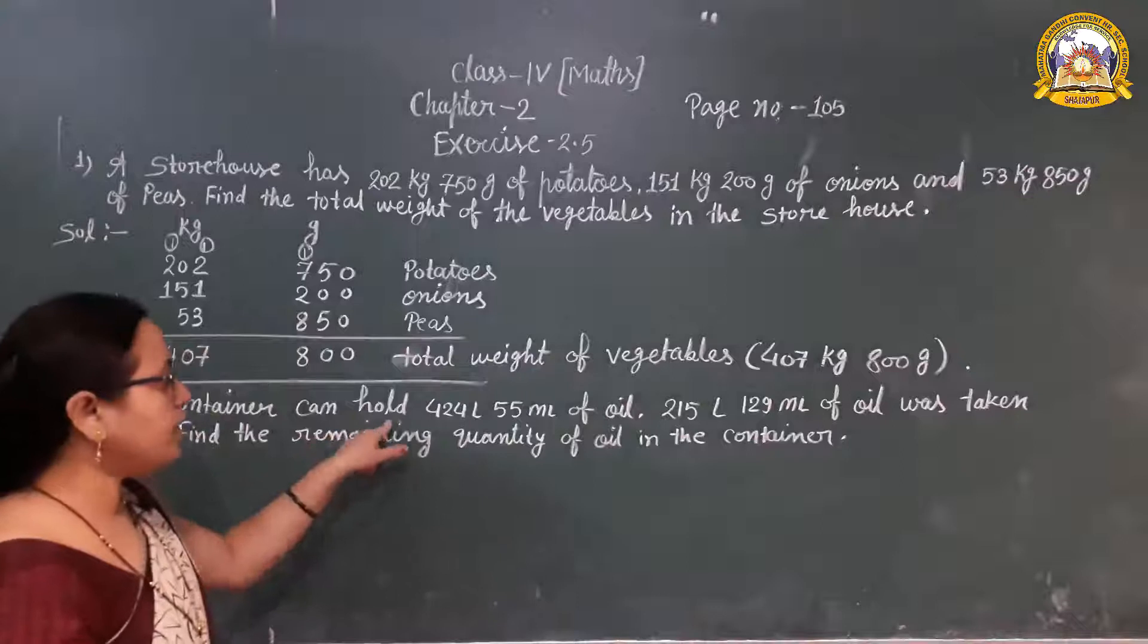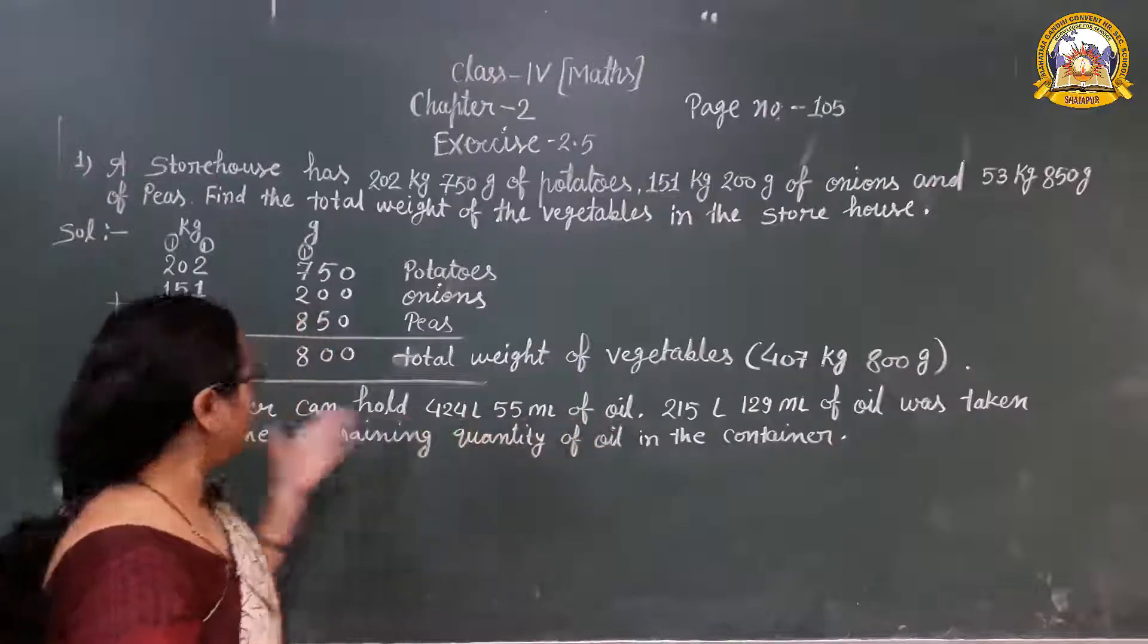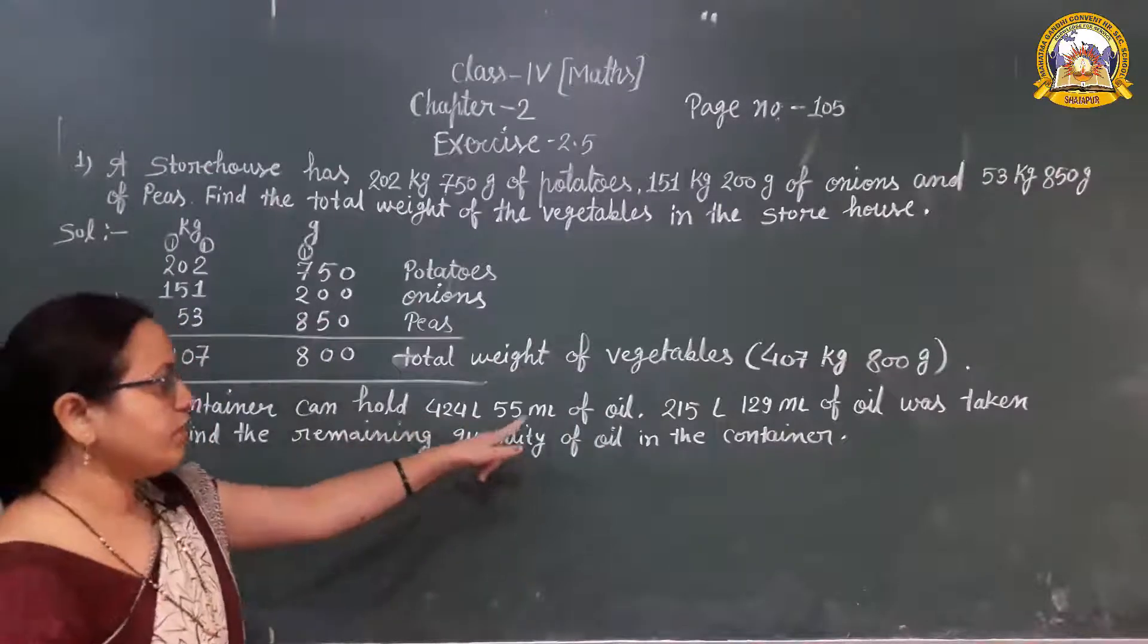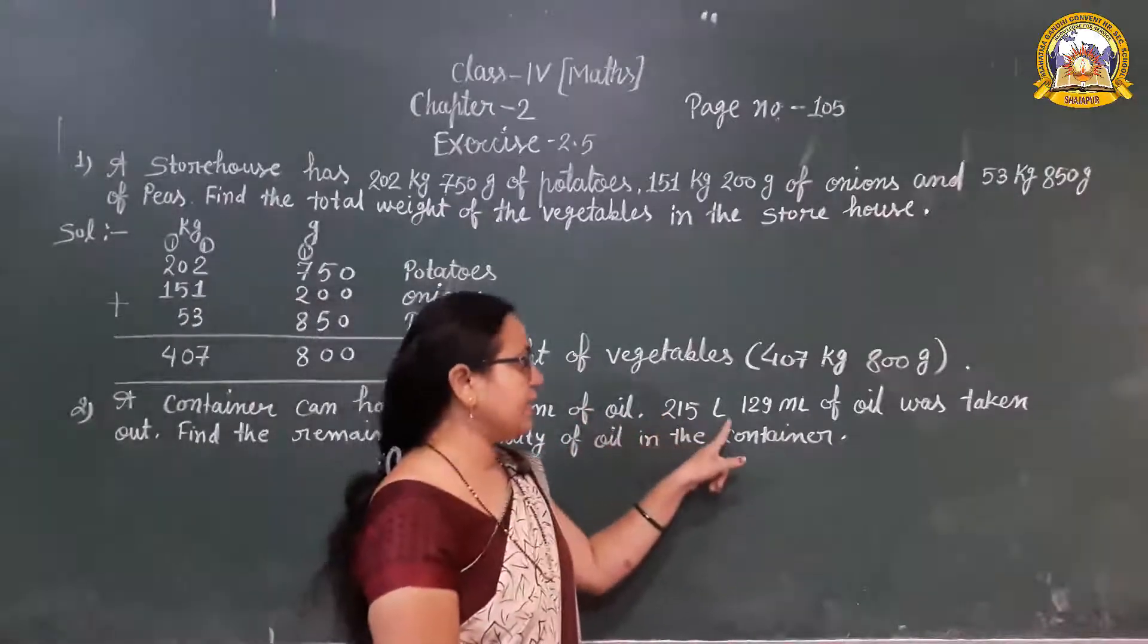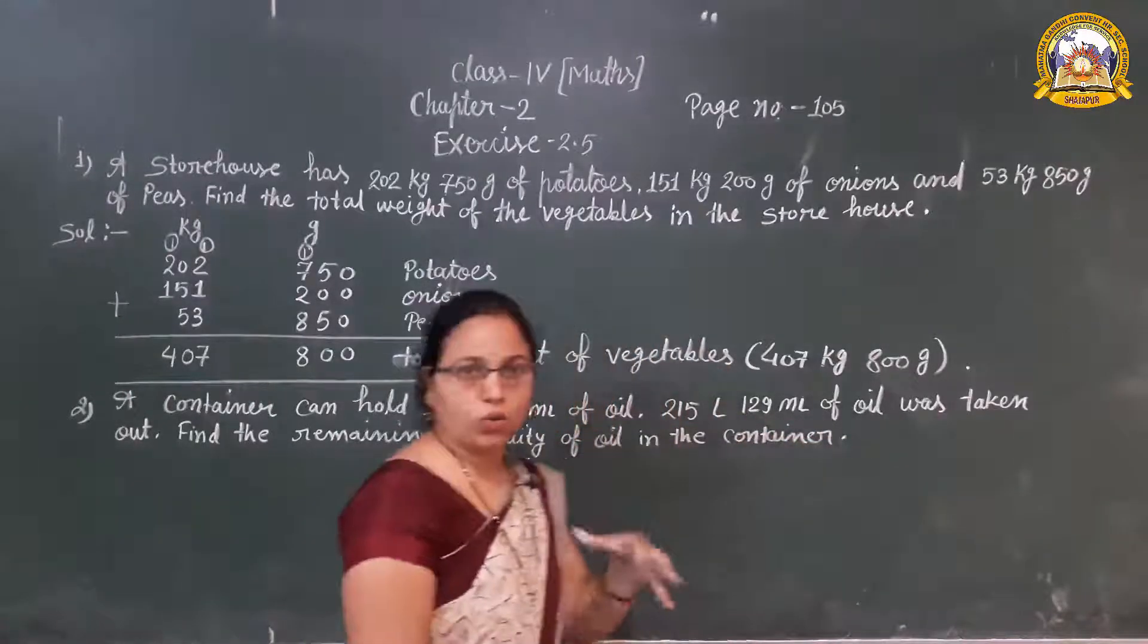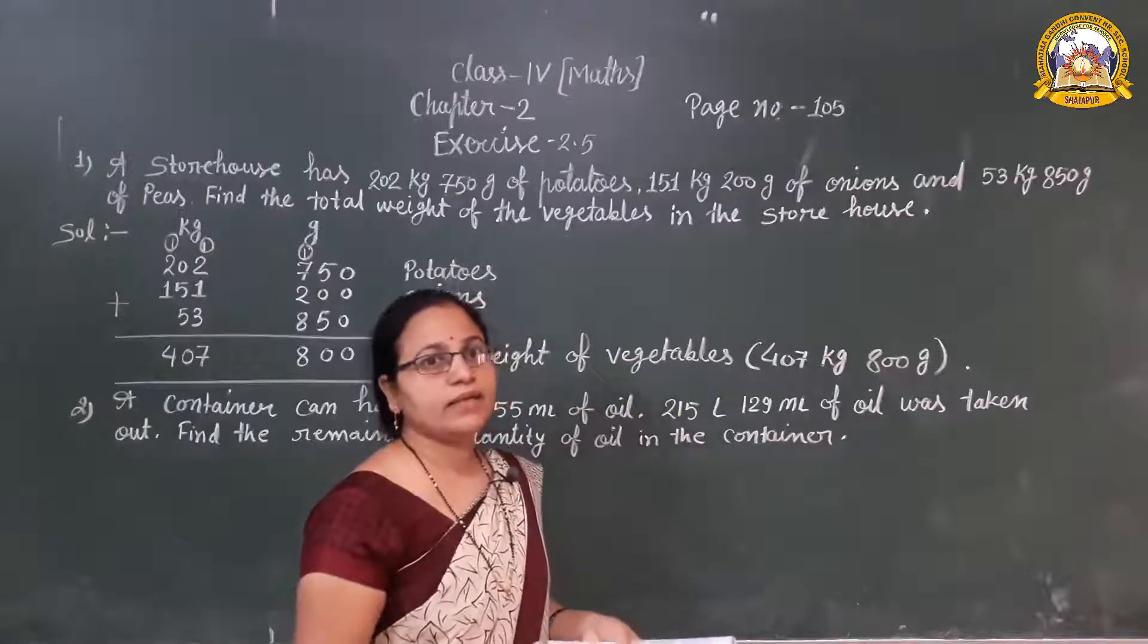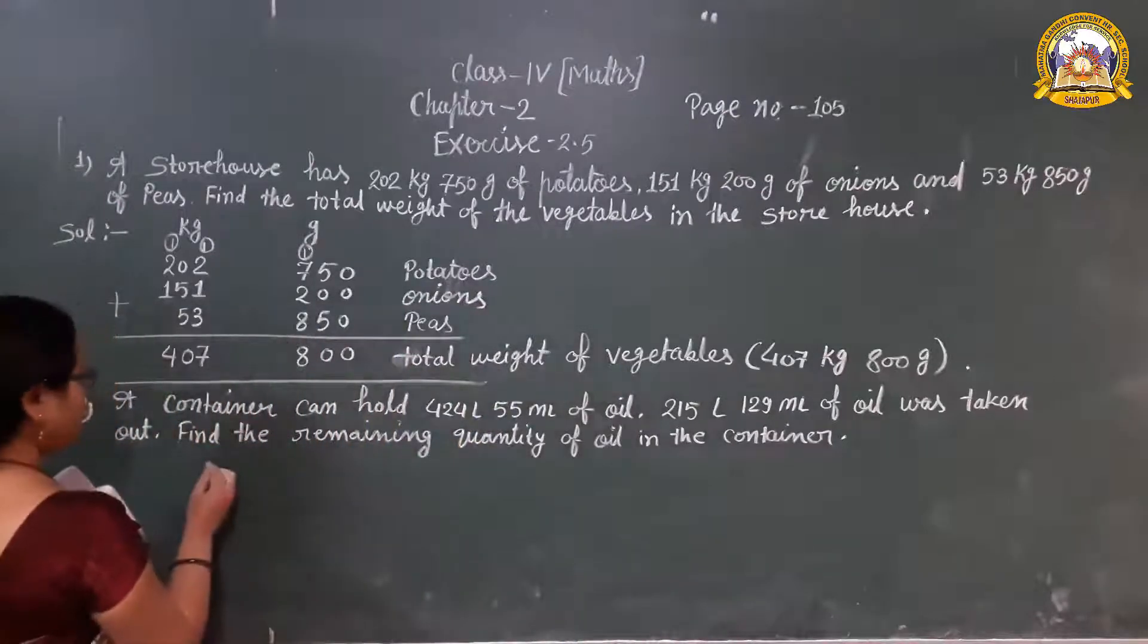A container can hold 424 liter 55 milliliter of oil. A container can hold means it is the capacity of the container, that 424 liter 55 milliliter of oil can be held by the container. Now, 250 liter 129 milliliter of oil was taken out. Find the remaining quantity of oil in the container. So which operation we are applying here? We are applying subtraction.